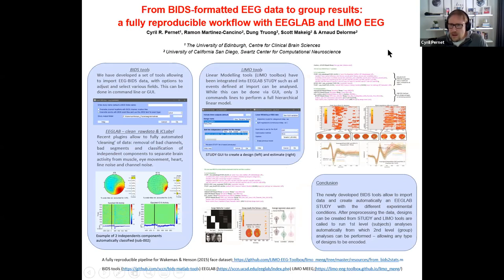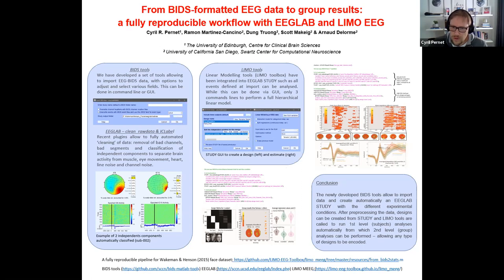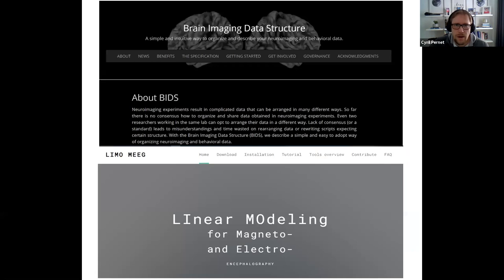In conclusion, the newly developed BIDS tools allow you to import data and automatically create a study with different experimental conditions. Then you can preprocess the data, and IC Label allows fully automated artifact rejection. Finally, you can automatically run your statistical analysis using LIMO tools, which are very flexible and allow you to encode any type of statistical design. I'm the main developer of the linear modeling toolbox, and we're working on further development.